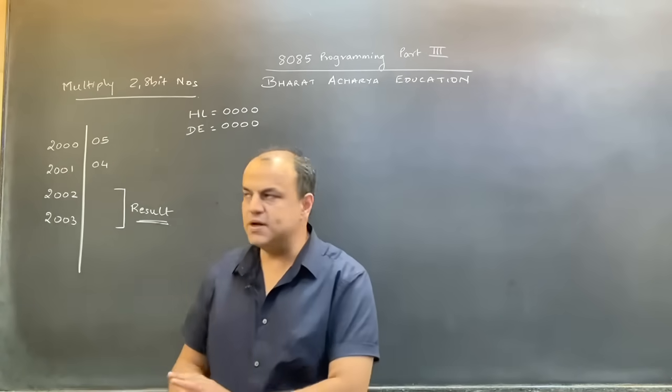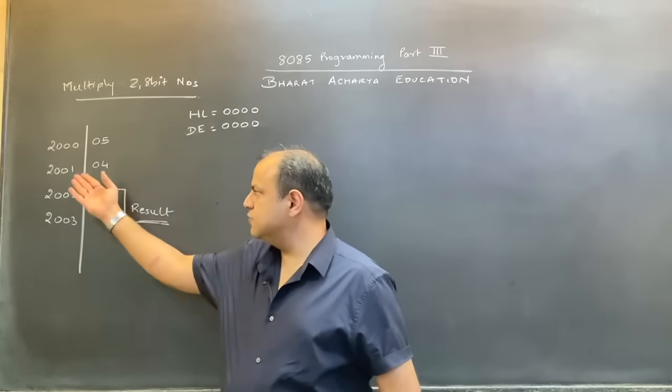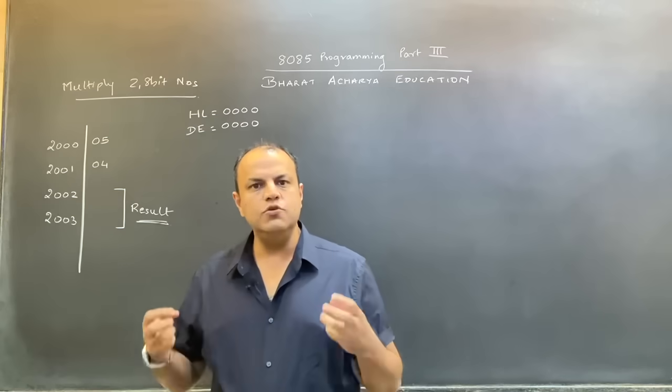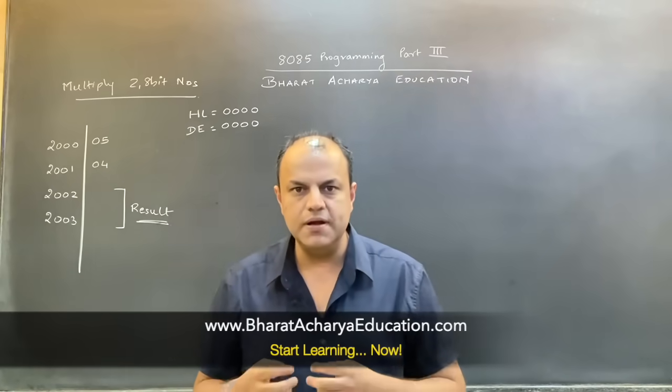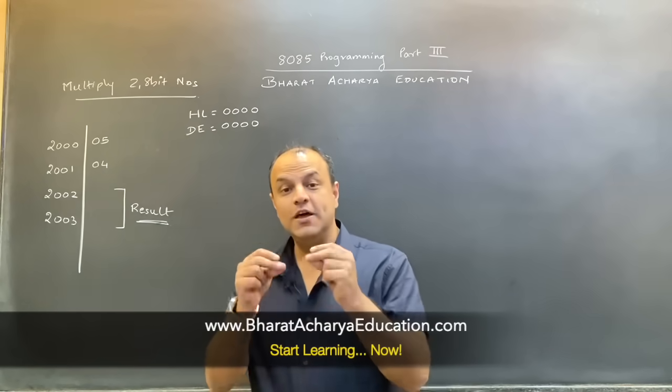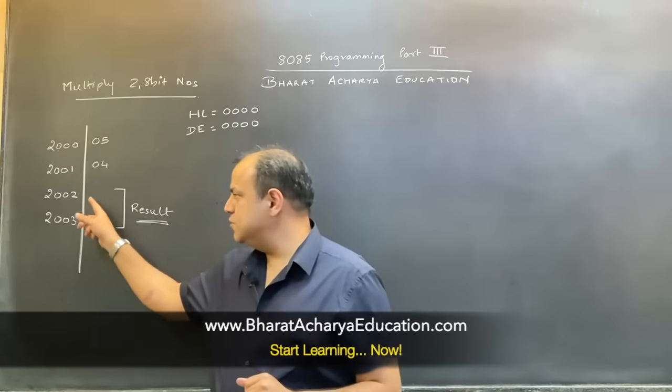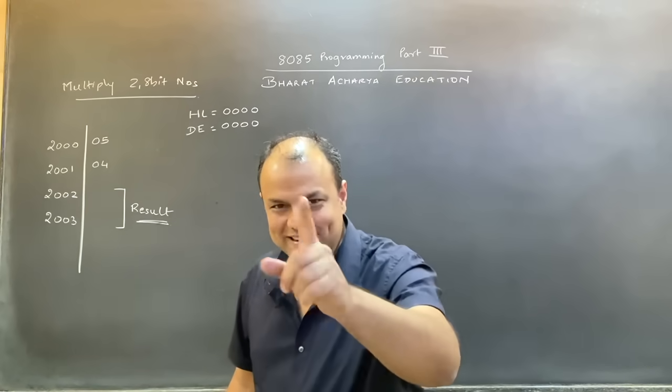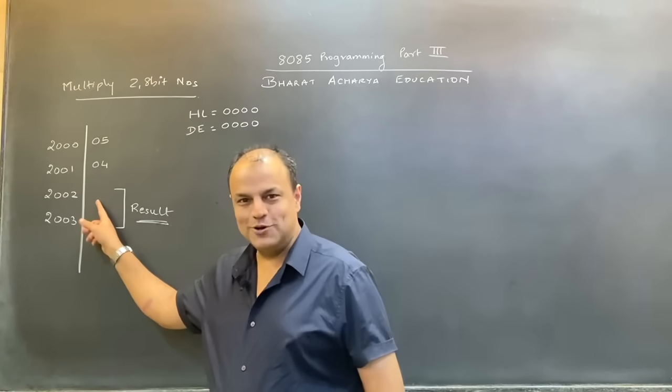When it comes to multiplication, let's say our two numbers are stored at location 2000 and 2001. We're going to take the two numbers, multiply them. When you multiply two 8-bit numbers, the answer is 16 bits. We're going to store the result at location 2002 and 2003, following the principle lower byte lower address, which means lower byte will come at location 2002 and higher byte will come at 2003.